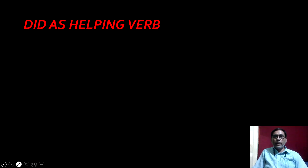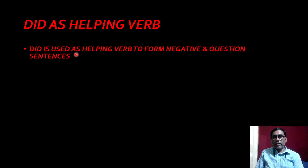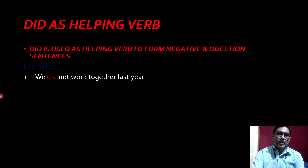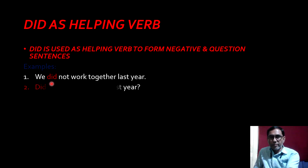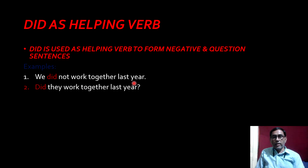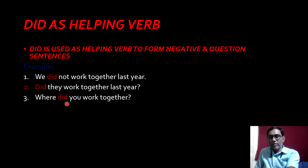Now, did as helping verb. Did is used as helping verb to form negative and question sentences. First example: We did not work together last year — here, did is used as helping verb. Second example: Did they work together last year? — it is a question sentence, did is used as helping verb. Third: Where did you work together? — in this sentence also, did is a helping verb.